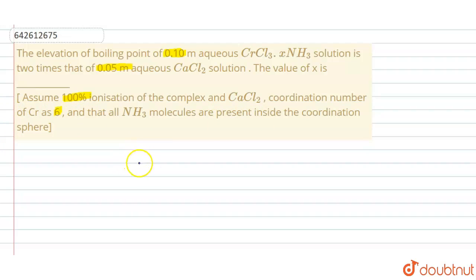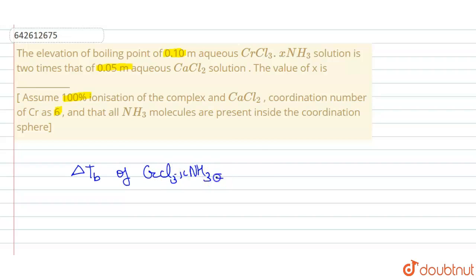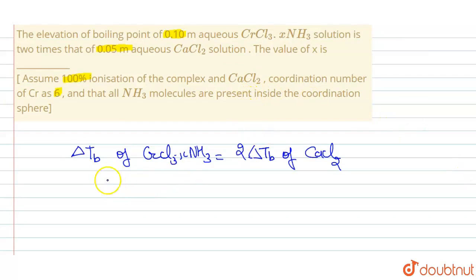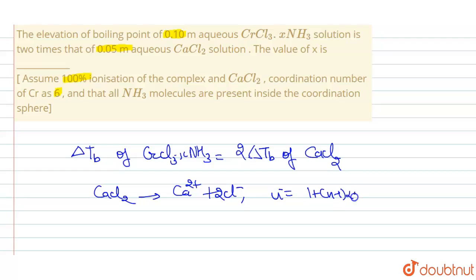The elevation in boiling point (ΔTb) of the complex CrCl₃·xNH₃ equals two times the ΔTb of CaCl₂. For CaCl₂, assuming 100% ionization, it dissociates into Ca²⁺ and 2Cl⁻. The van't Hoff factor i = 1 + (n − 1)α. Here n = 3 and α = 1, so i = 1 + 2 = 3.